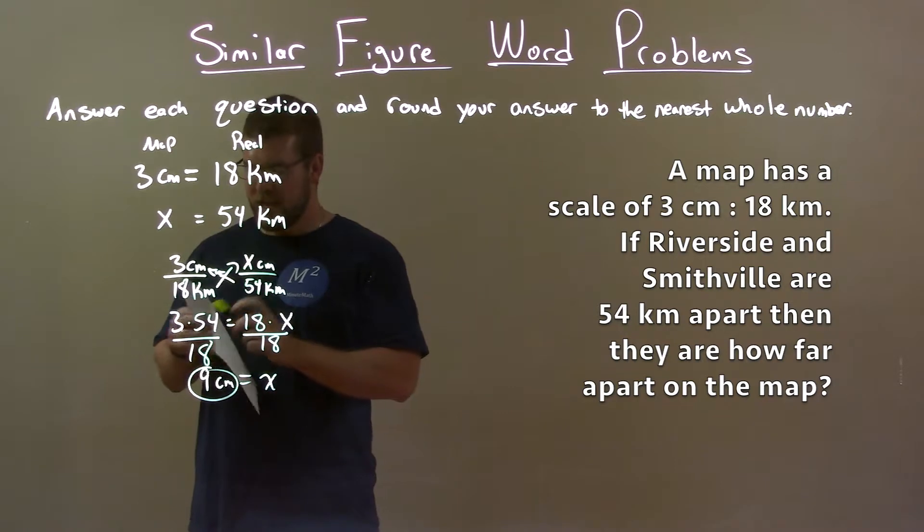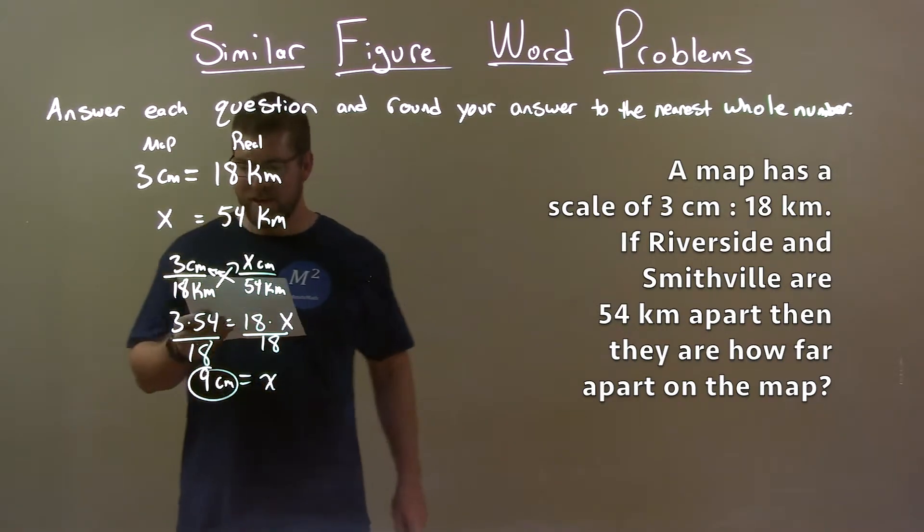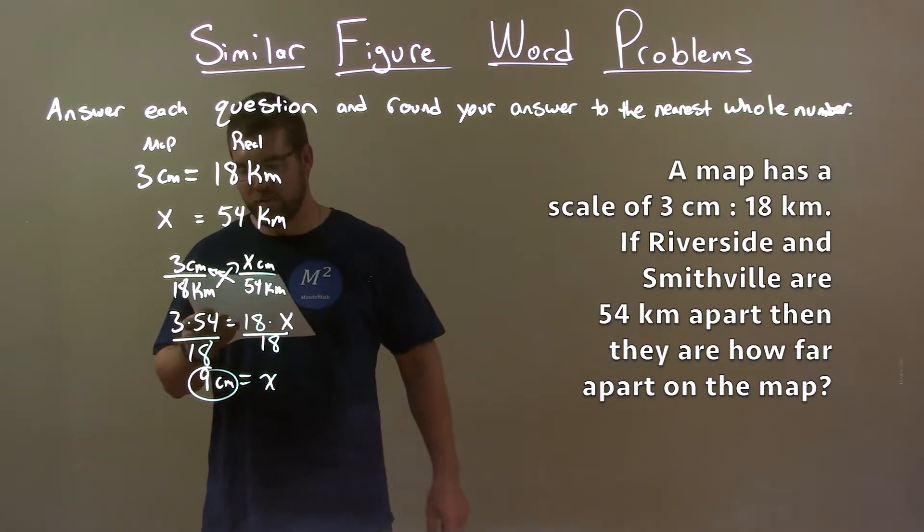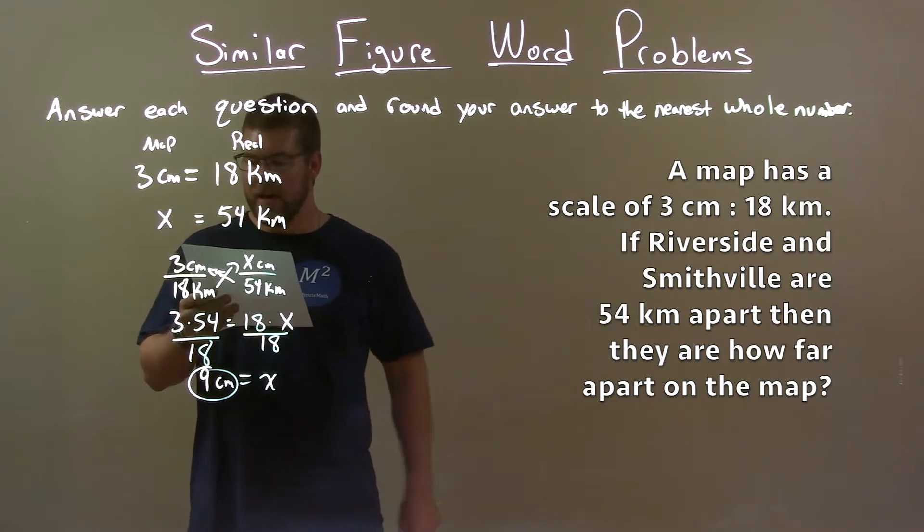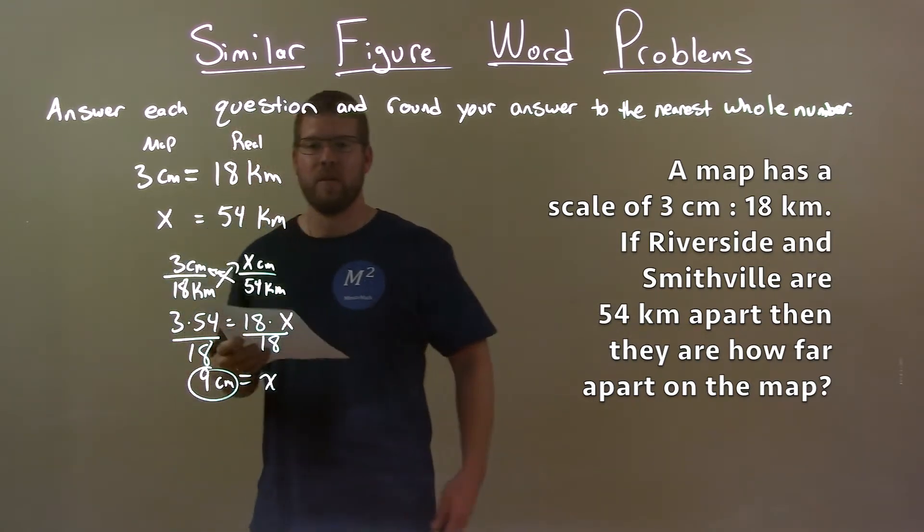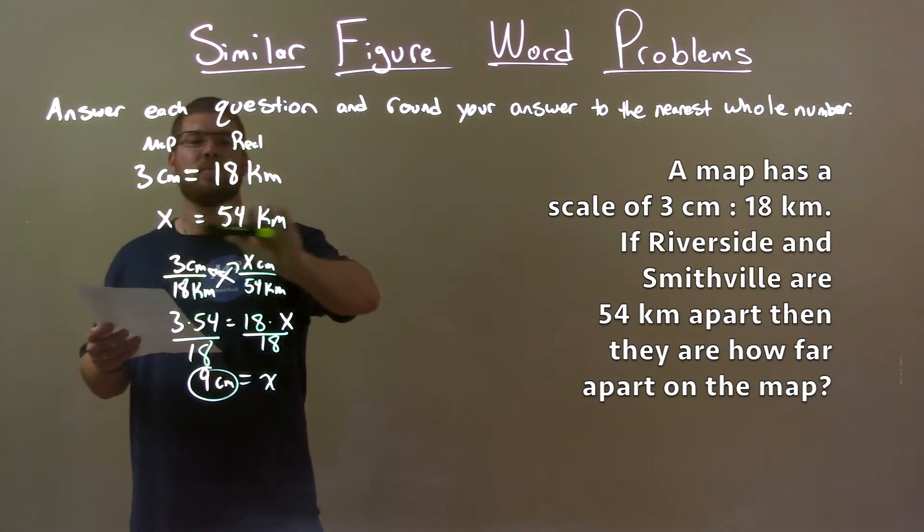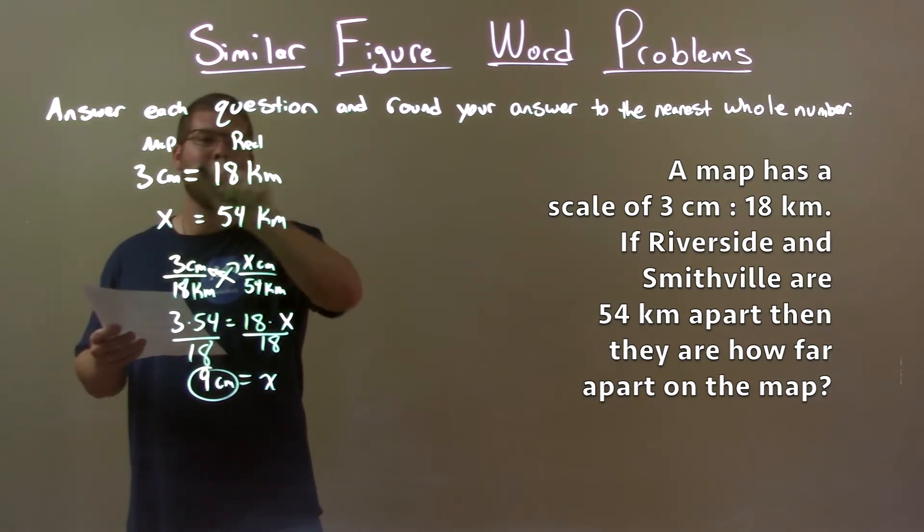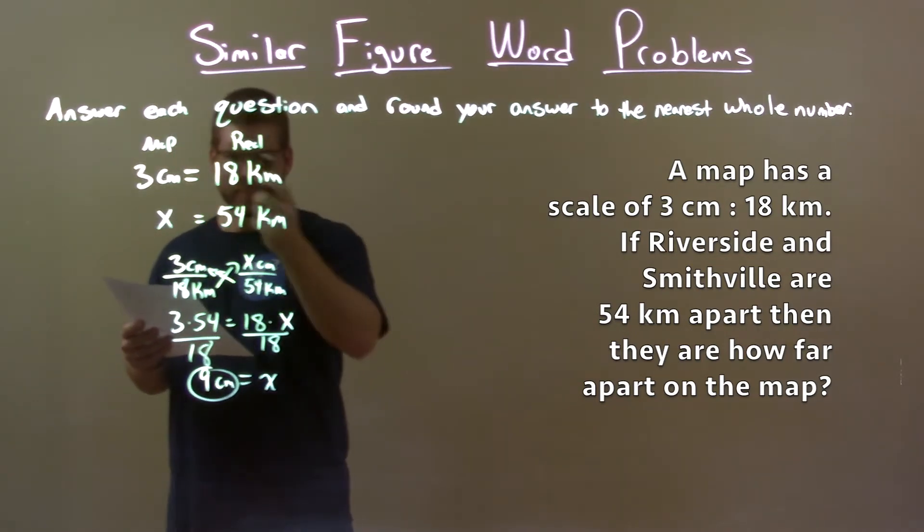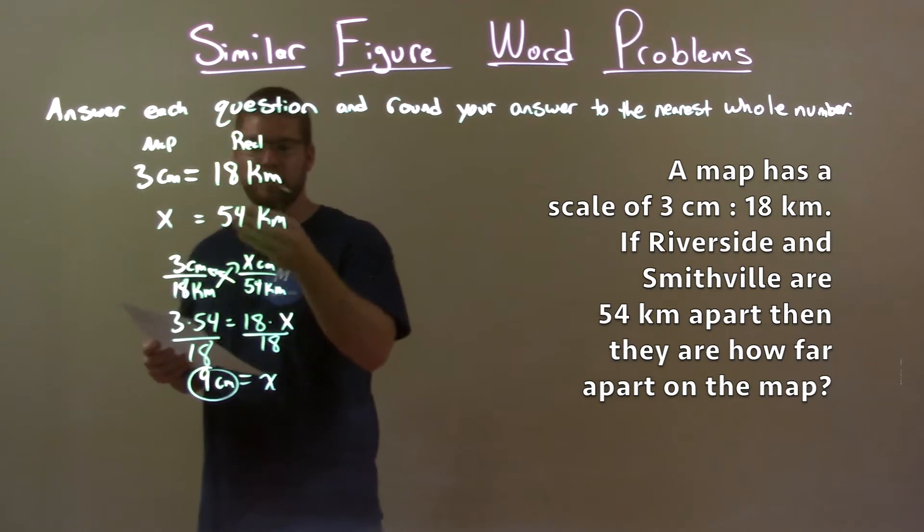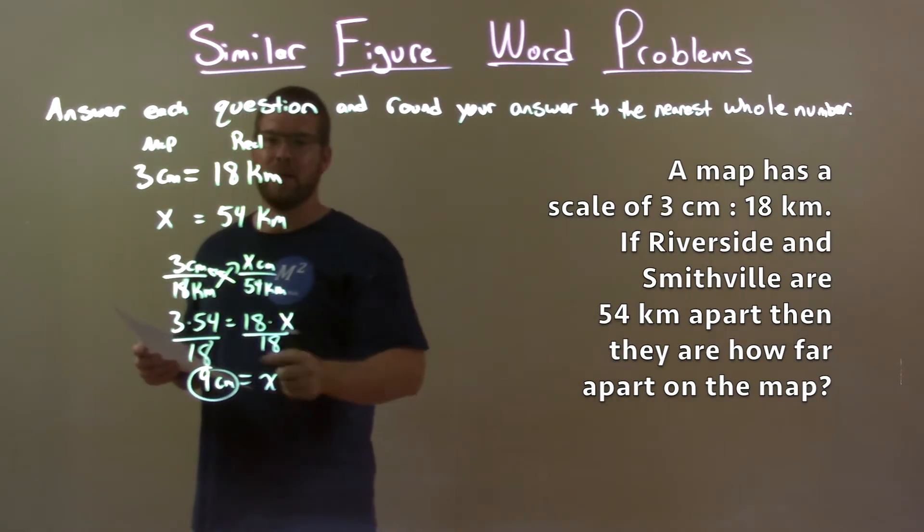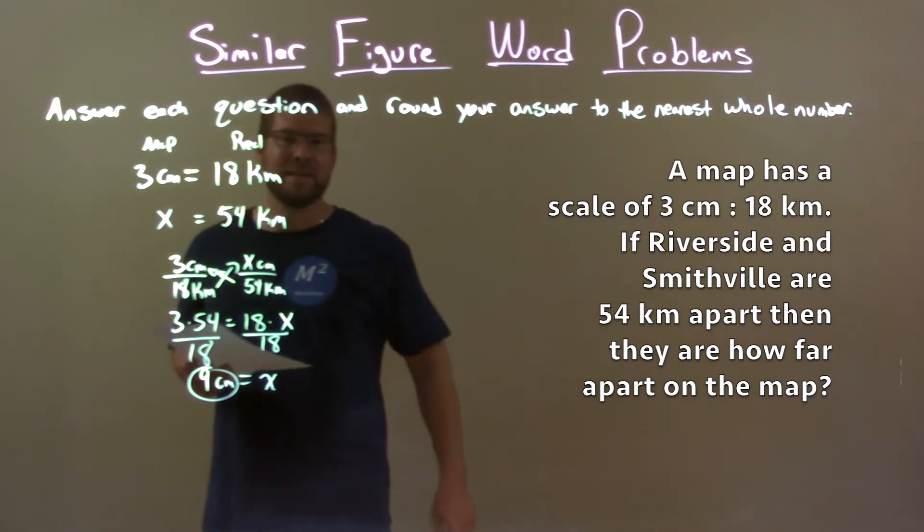Quick recap. We're given a map with a scale of 3 centimeters to 18 kilometers. If Riverside and Smithville are 54 kilometers apart, how far apart are they on the map? We created the relationship between the map and real life, then set up a proportion and solved for the missing variable x. Our final answer is 9 centimeters.